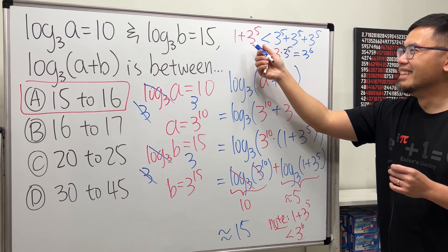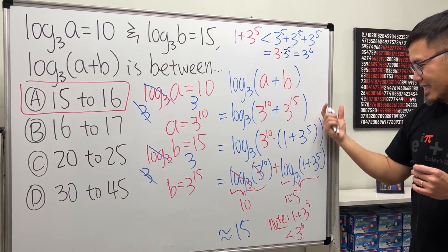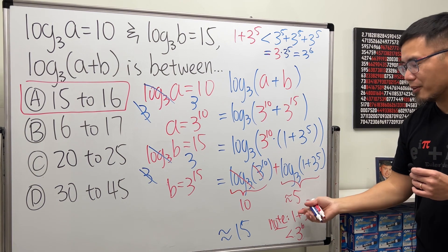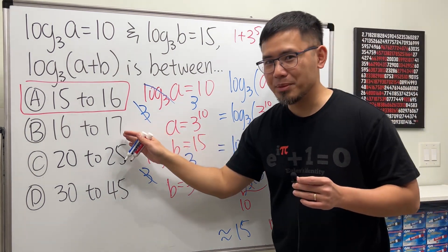So, for sure, this guy is less than 3 to the 6th, so that means the log of that is about 5 point something, which is less than 6. That's why the answer cannot be B. That's it.